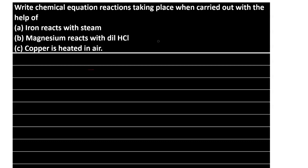So let us read the question and discuss. The question is: write the balanced chemical equation for reactions taking place when iron reacts with steam. When iron (Fe) reacts with steam (H2O), it forms Fe3O4, which is iron oxide, along with the liberation of hydrogen gas.